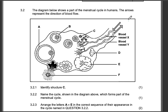Let us see what is happening. Identify structure C. There is structure C — that is a primary follicle. Structure C is the primary follicle.